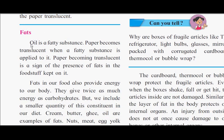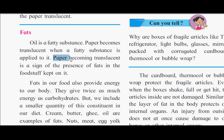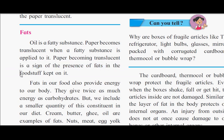Fats: Oil is a fatty substance. Paper becomes translucent when a fatty substance is applied on it. Paper becoming translucent is a sign of the presence of fats in the foodstuffs kept on it.